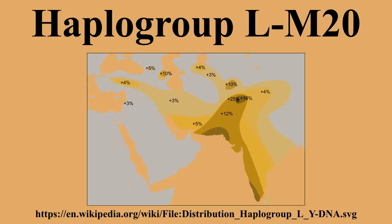In molecular evolution, a haplogroup is a group of similar haplotypes that share a common ancestor having the same single nucleotide polymorphism mutation in all haplotypes. Haplogroup L M20 is a Y-chromosome DNA haplogroup found in South Asia, Western Asia, and Europe, and is defined by SNPs M11, M20, M61, and M185.